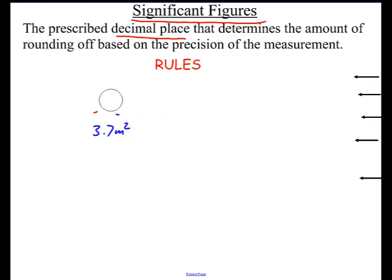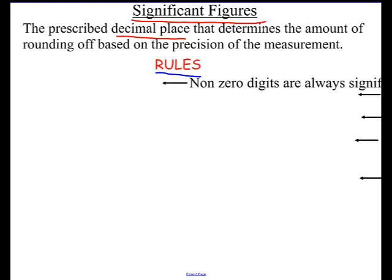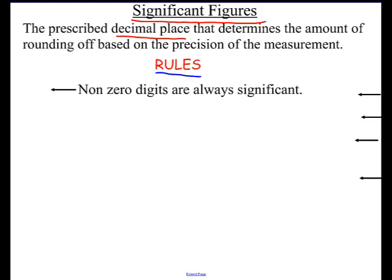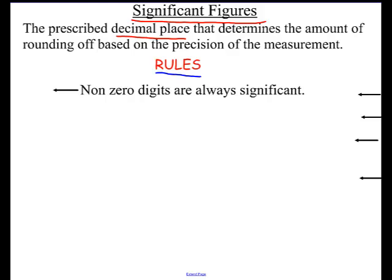Let me go over the rules — hopefully this is review, but let's look at how we approach numbers when dealing with significant figures. Rule one: non-zero digits are always significant. That's a pretty straightforward rule. So if I have something like 1, 2, 3, the answer is three significant figures, because if it's a non-zero digit, it was measured, and that's an important digit.